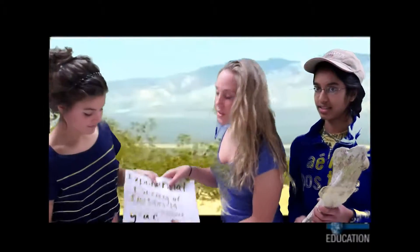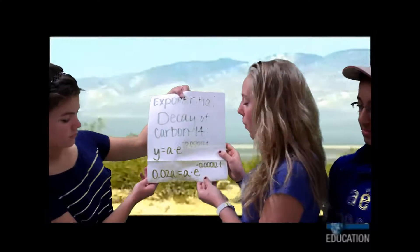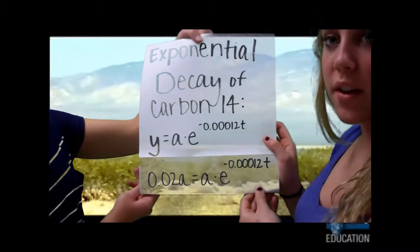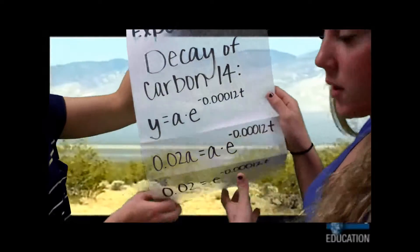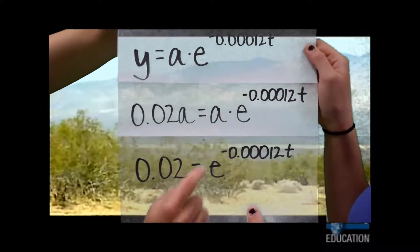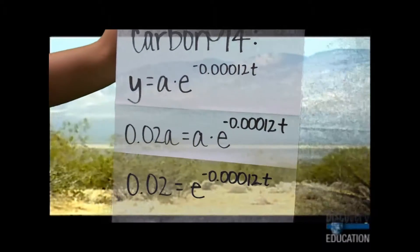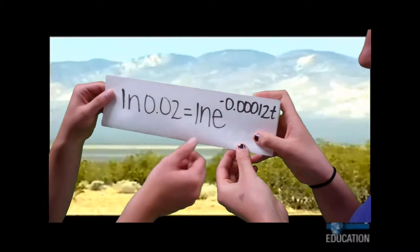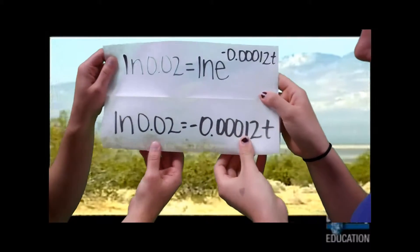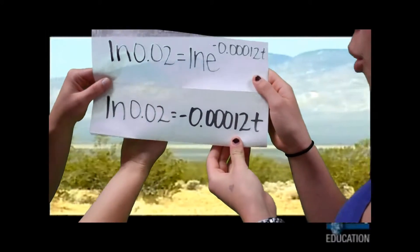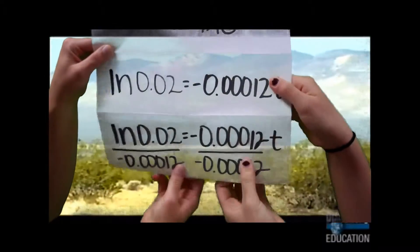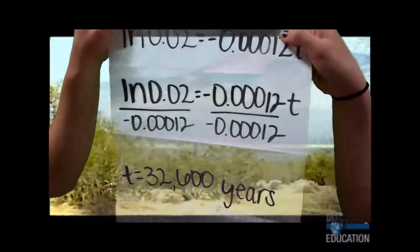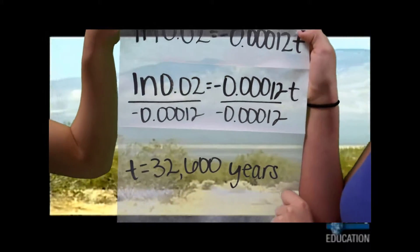This bone contains 2% of the carbon-14 that it originally contained when it was alive. So in place of Y in our formula, we put 0.02A, because the present value is 2% of the initial value. Then the A's cancel out in the formula because they are on both sides. We then take the natural log on both sides of the equation to undo E. Then we divide both sides by negative 0.00012, which equals 32,600 years of age.